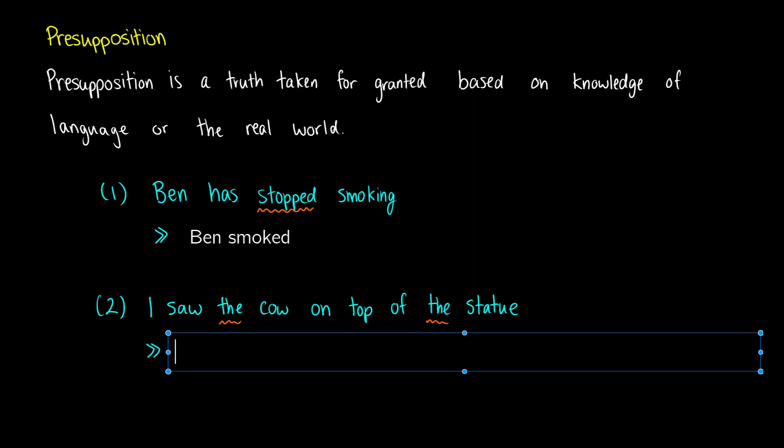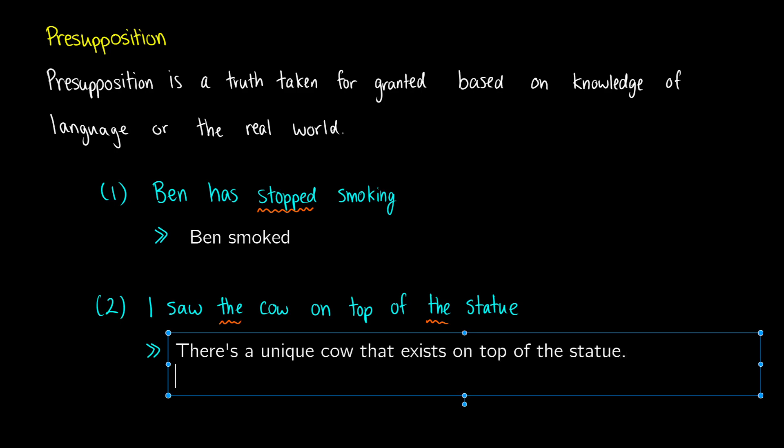If you say 'I saw the cow on top of the statue', what you're saying is that there's a unique cow that exists on top of the statue. What you're also presupposing is that a statue exists.